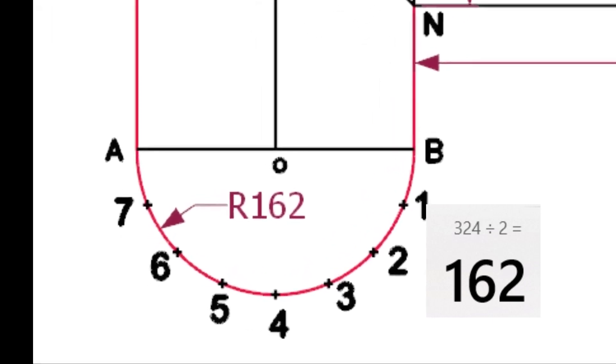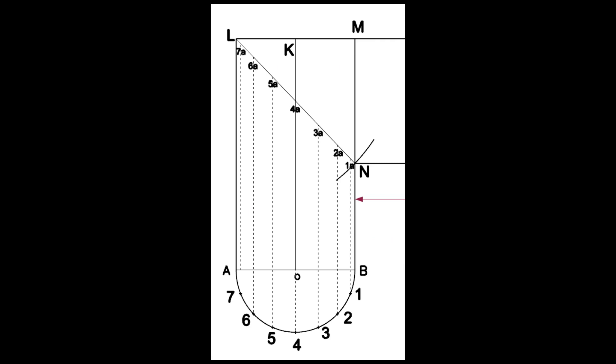Draw a half circle centering O and divide the circumference into eight equal parts. Draw lines 77A, 66A, etc., intersecting the line LN.